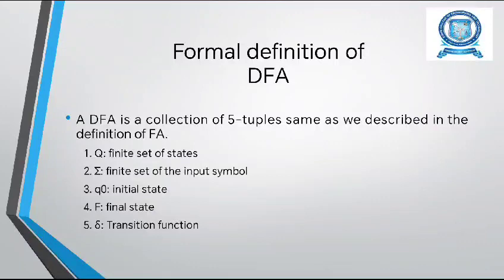Two parameters are passed to the transition function: one is the current state and another is the input symbol. The transition function returns a state which is called the next state. For example, Q1 equals delta(Q0, A) means from current state Q0 with input A, the next state is Q1. In short, the DFA is a 5-tuple notation: A = (Q, Sigma, delta, Q0, F), where A is the collection of these 5 elements.